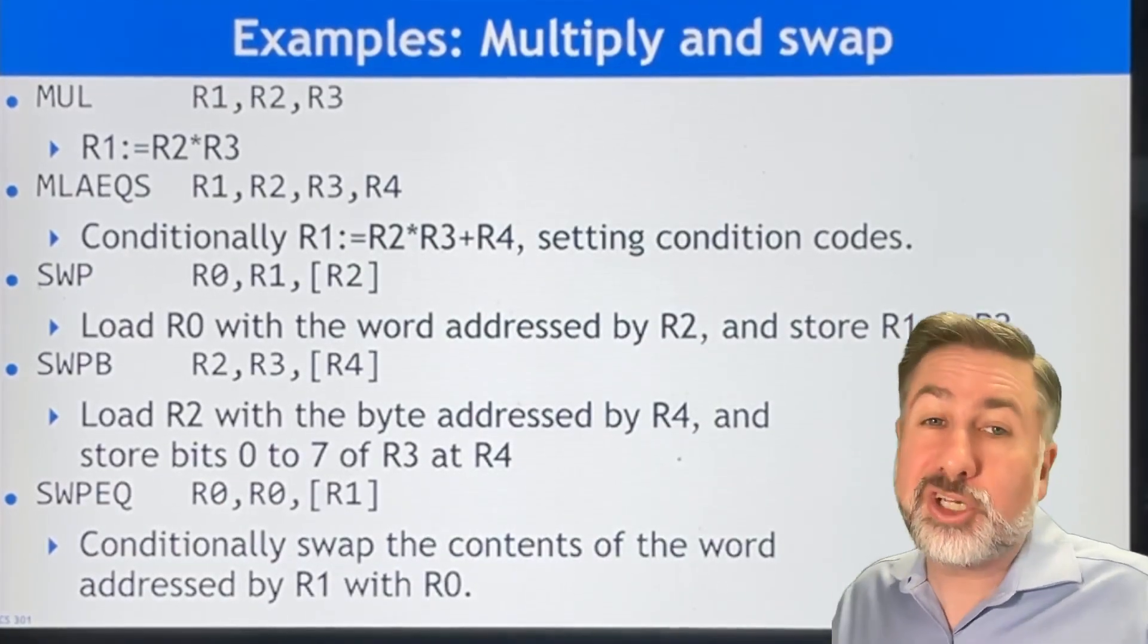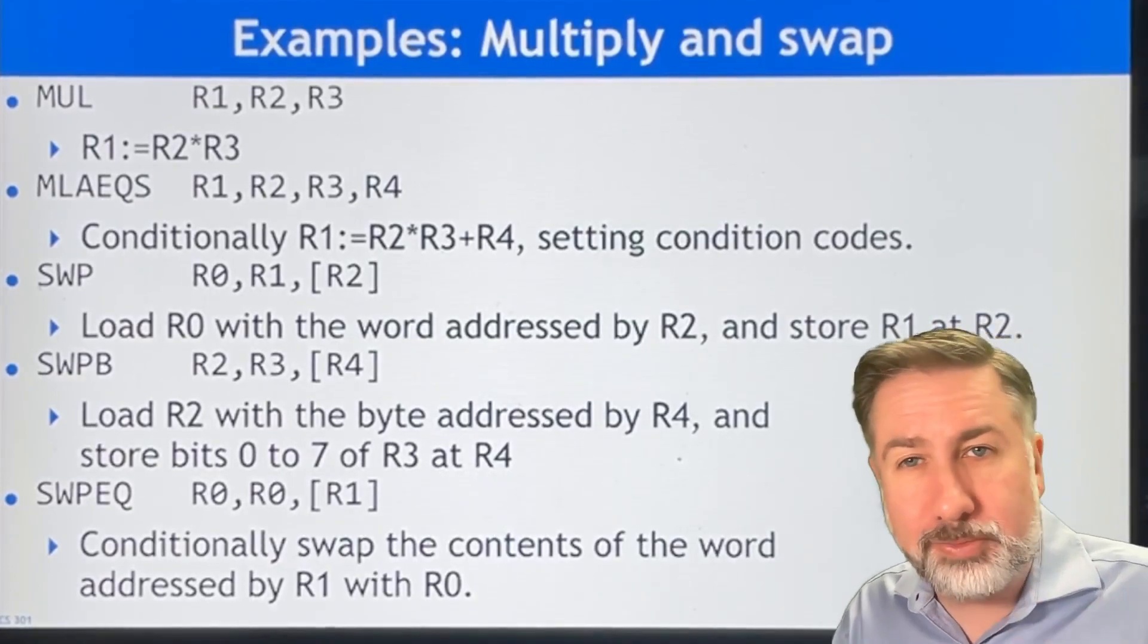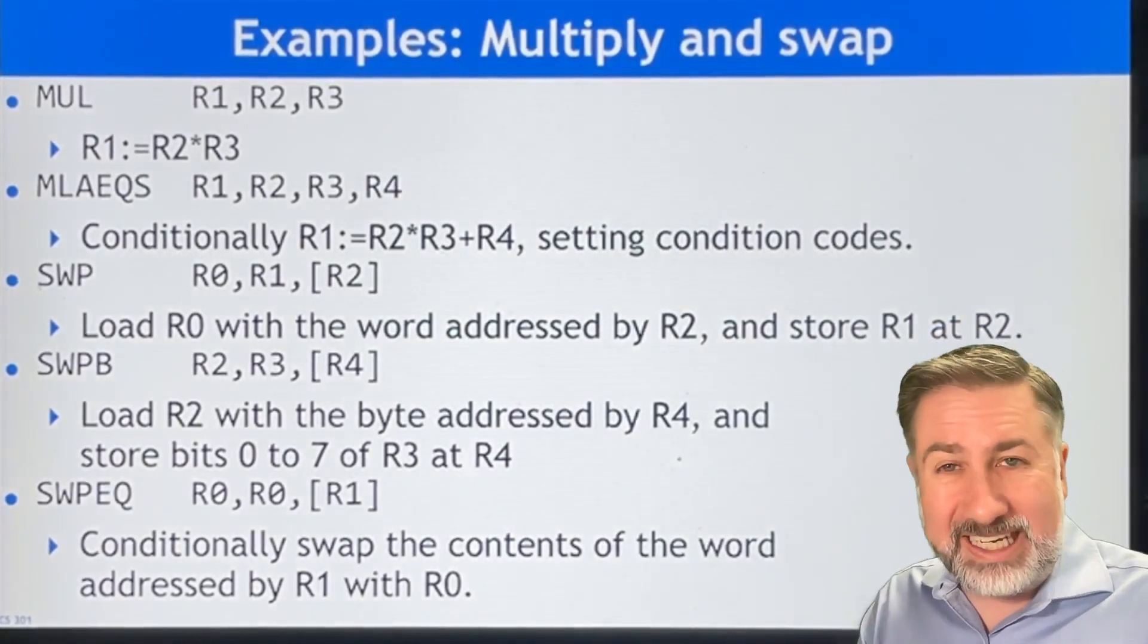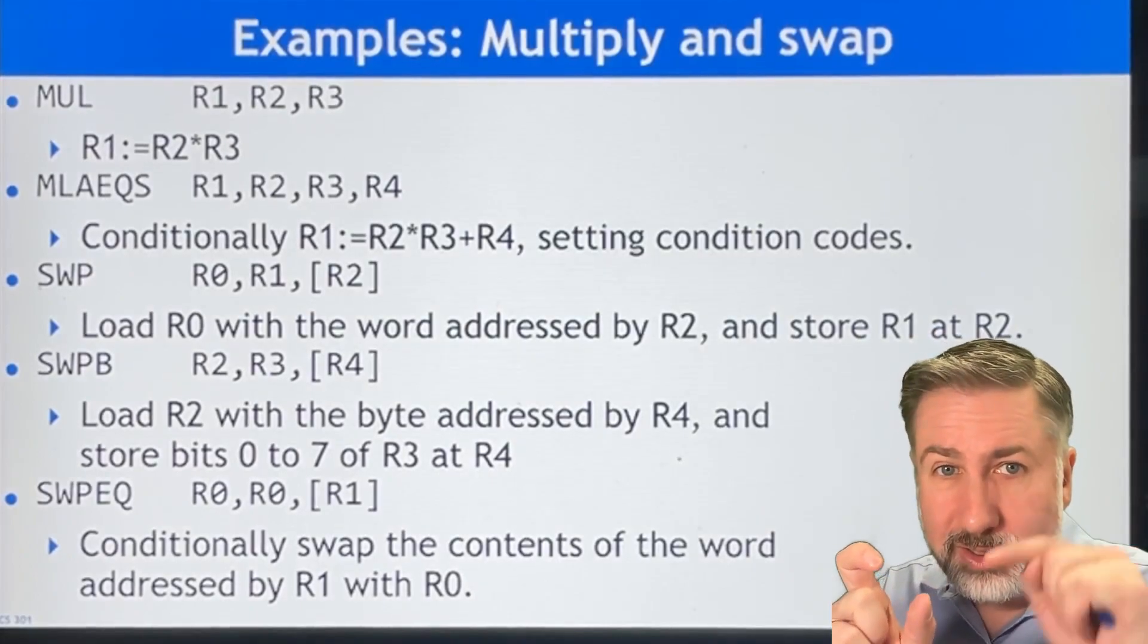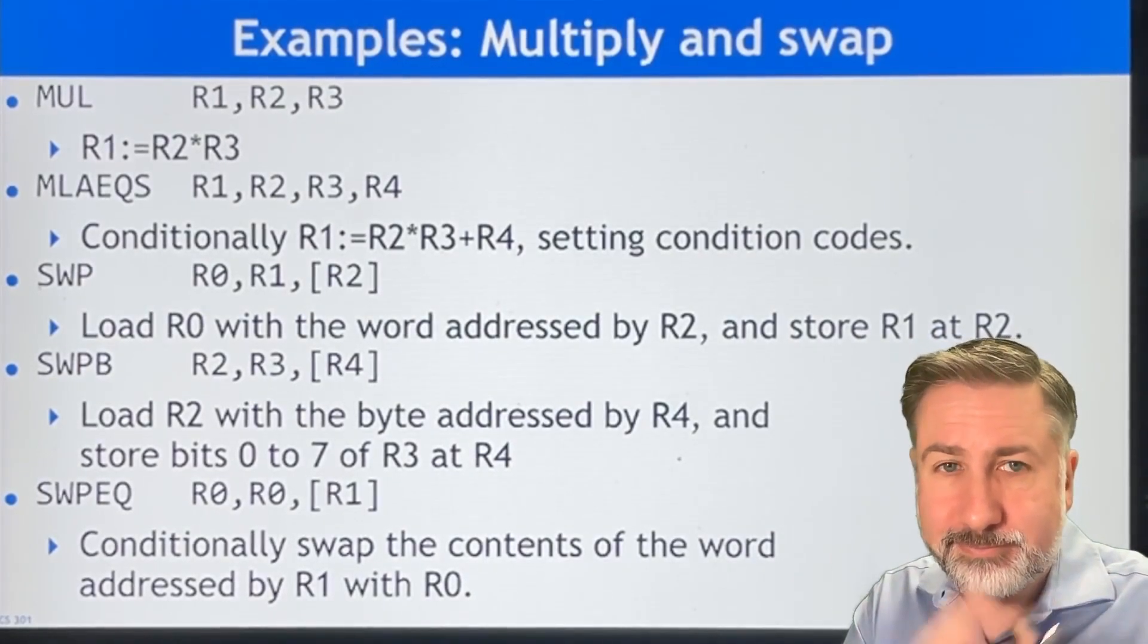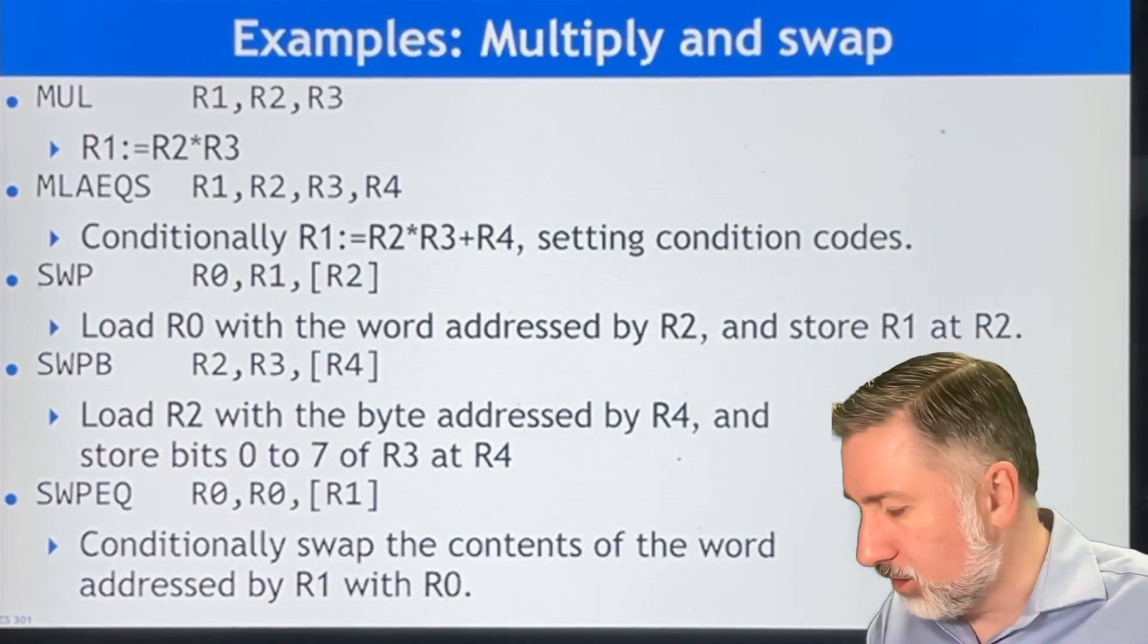And because you've got the S flag, you're going to set the condition codes there as well. So this is a very common operation. Multiply and accumulate. R1, R2, R3, R4. R1 gets R2 times R3 plus R4. So that's multiply, multiply-accumulate.